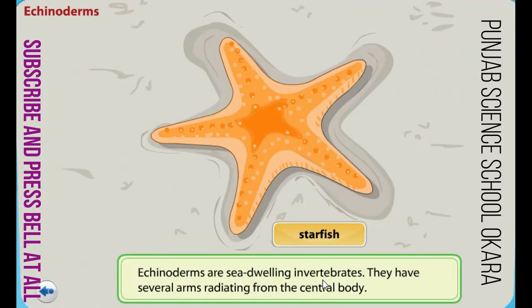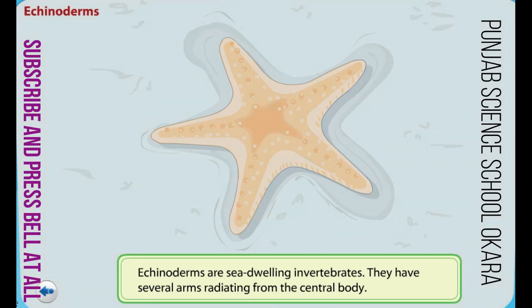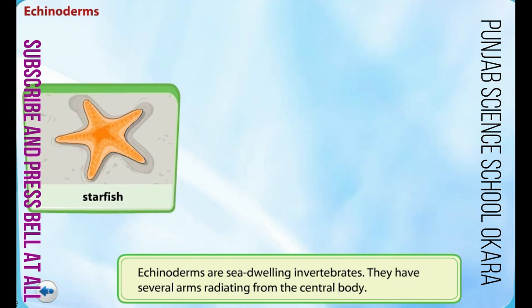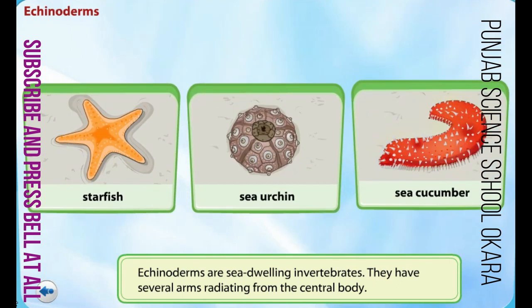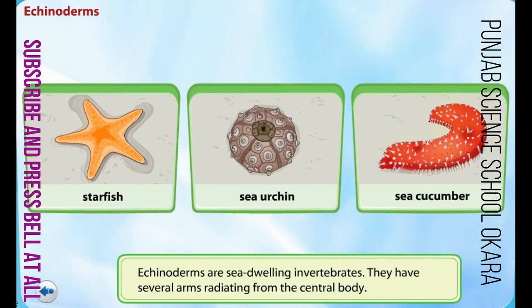Echinoderms are sea-dwelling invertebrates. They can be identified by the several arms radiating from a central body. Starfish, sea urchin, and sea cucumbers are examples of echinoderms.